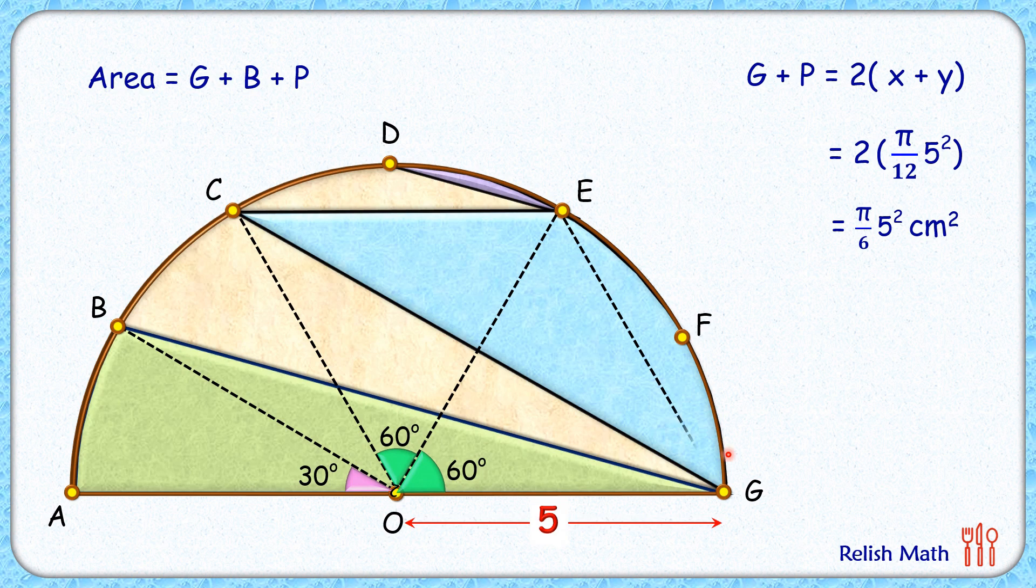Let's join EG. Now here, if we look carefully, OC and OE are radii and thus equal. Applying angle sum property, we get angle E and angle C are 60 degrees each.